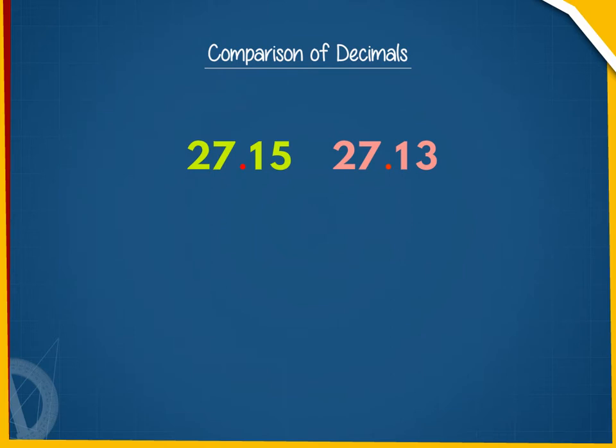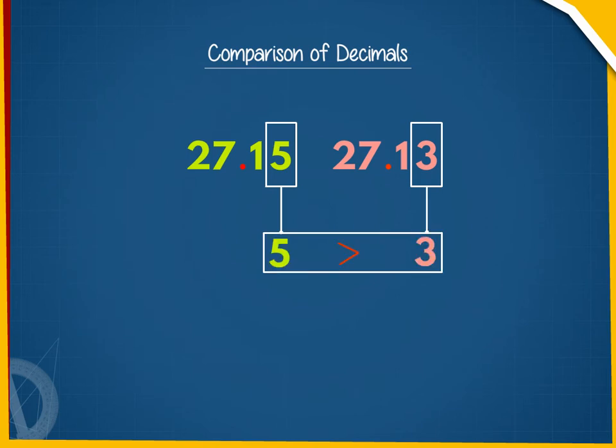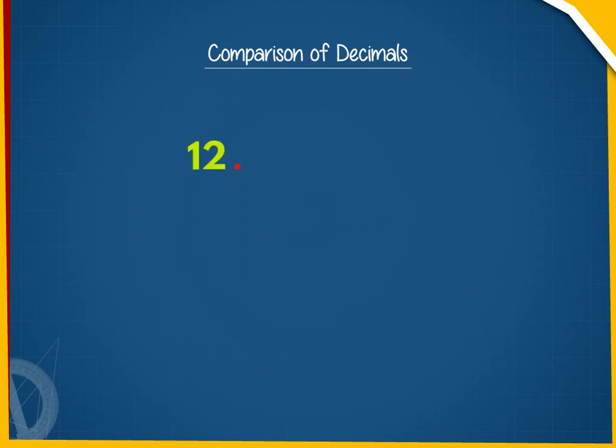If even the tenths are equal, then we compare the hundredths. The decimal with greater hundredths is greater and so on. Suppose we have to compare 12.7 and 2.34.